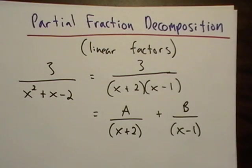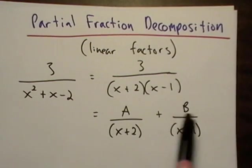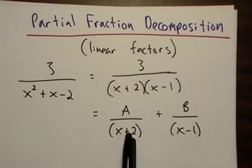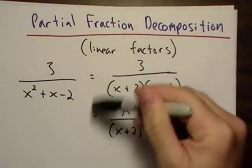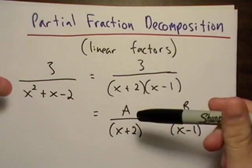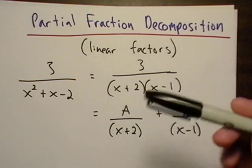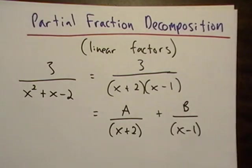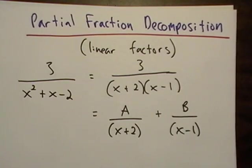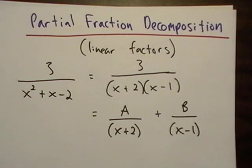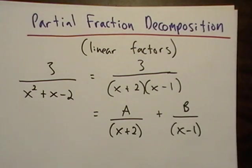Now, so basically what we're going to do is we're going to go hunt down A and B. And once we hunt down A and B, we'll be able to do a very simple integral of, like whatever over x over 2, it usually turns out to be a logarithm or something.